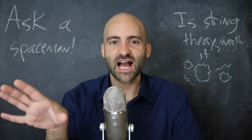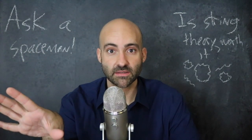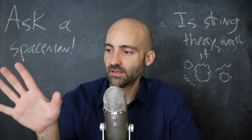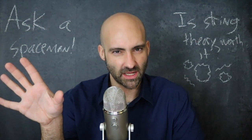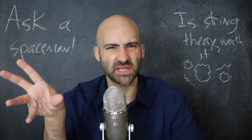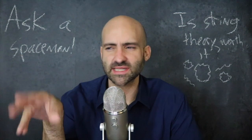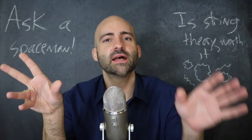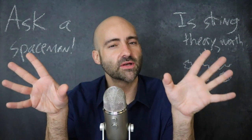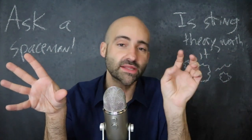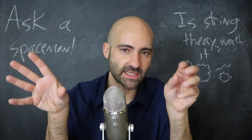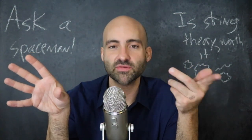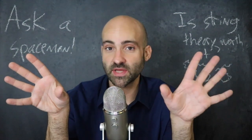There are two kinds of particles in our world. On one side you have something called the fermions — they're like their own family, and these are the building blocks: these are the electrons, the quarks, the neutrinos. Then on the other side you have something called the bosons, and they're their own family, and these are the force carriers — the photons, the gluons, the Z bosons, and also the Higgs boson.